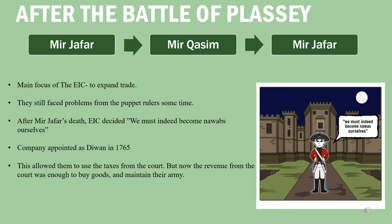After the defeat at Plassey, Mir Jafar was made the Nawab as promised. The company wanted a puppet ruler who would grant them all privileges, and they got one. However, it became difficult to control puppet rulers since they sometimes refused to oblige. Mir Jafar was followed by Mir Qasim, and then Mir Jafar was made Nawab again — but this time he had to pay 5 lakhs every month as payback. The company was becoming more and more greedy.